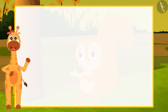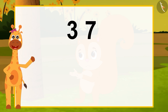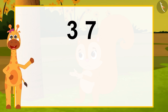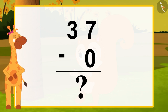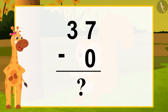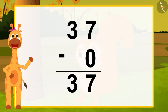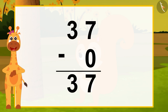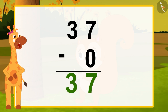Let us look at another example. If there are 37 ladoos in a shop and zero ladoos are taken by Ramu, how many ladoos are there in the shop now? That's right — 37. As we have just seen, when we subtract zero from a number, the answer is the same as the number we subtracted from. So if zero is subtracted from 37, the answer will be 37 only.